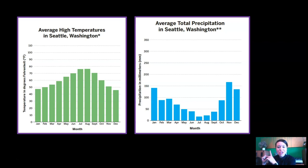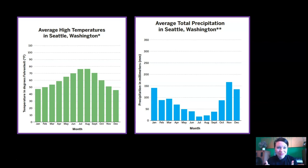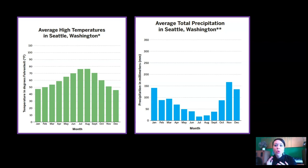These are the two temperature graphs we saw for the climate of Seattle in the last lesson. Do you remember these graphs? The green one says average high temperatures in Seattle, Washington, and the blue one says average total precipitation in Seattle, Washington.